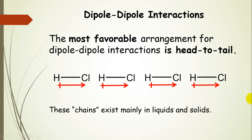When thinking about dipole-dipole interactions, the most favorable arrangement is head-to-tail. The partial negative wants to line up as close as possible to the partial positive — this maximizes the interaction. These chains mainly exist in liquids and solids.